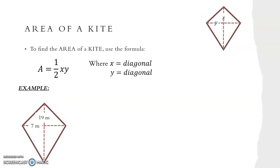To find the area of a kite we use the exact same formula as for a rhombus: A equals a half XY, where X and Y are the diagonals. We write out our formula A equals a half XY and then substitute in our diagonals of 19 and 7. So we get A equals a half times 19 times 7. We put this into our calculator to get an area of 66.5 metres squared.